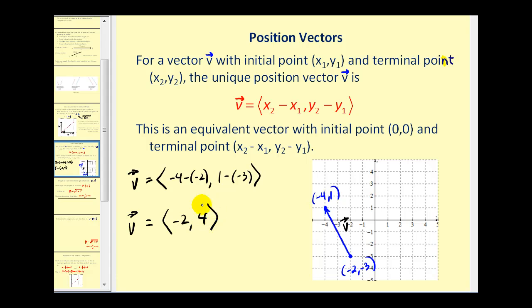If we graph this position vector, its initial point will be at the origin and its terminal point will be at (-2, 4). These two vectors are equal, but the black vector is the position vector.